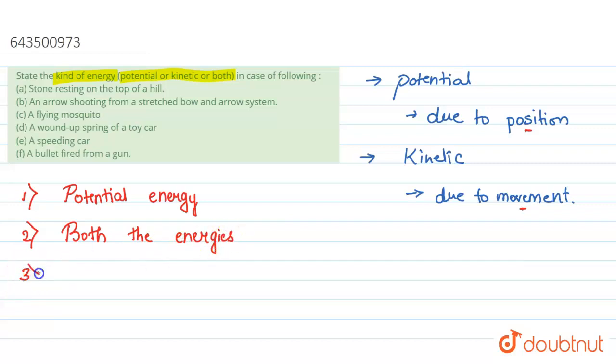Okay, let's go to the third one. It says a flying mosquito. Now because this one is due to the movement—the mosquito is flying, it's moving—the answer will be kinetic energy. So the third one will be kinetic energy.